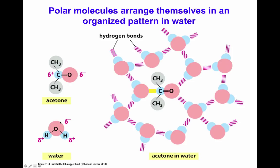Other molecules also have this capacity for polarity. For example, acetone — an organic molecule containing three carbons and a carbonyl group — has oxygen pulling electrons to itself because it has a higher electronegativity than carbon. Therefore, the oxygen will be negatively charged with a negative dipole moment, and the carbon will get a positive dipole moment. Carbon has a very similar electronegativity to hydrogen, so the distribution of electrons around the carbon and hydrogen atoms is similar, and those sides do not get polarized.